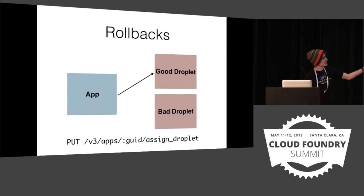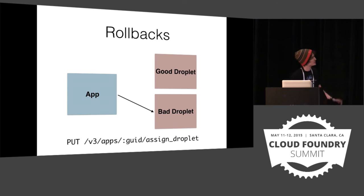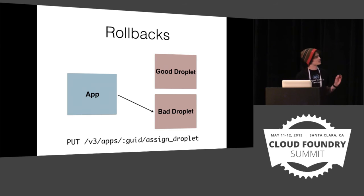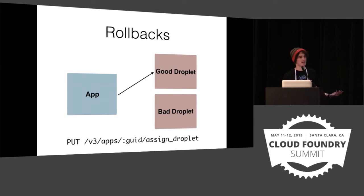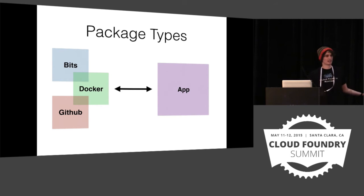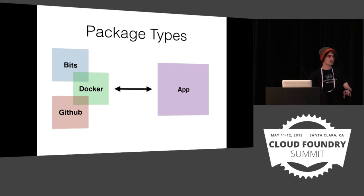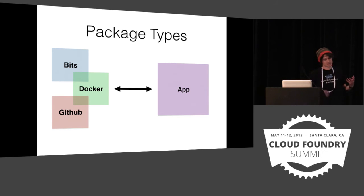Rollbacks are another big thing. We have an application associated with a current droplet. If I want to assign it to a new droplet, I call the assign current droplet endpoint. But if that droplet has bugs and the code is bad, now that we've moved droplets to a top-level domain representation, you just reassign it back to the old droplet — this is huge. Lastly, package types: we want Docker, GitHub, bits — we want them all. Once you implement the package concept in Cloud Controller as a top-level object, you just plug it into the existing infrastructure and it works seamlessly with your applications.